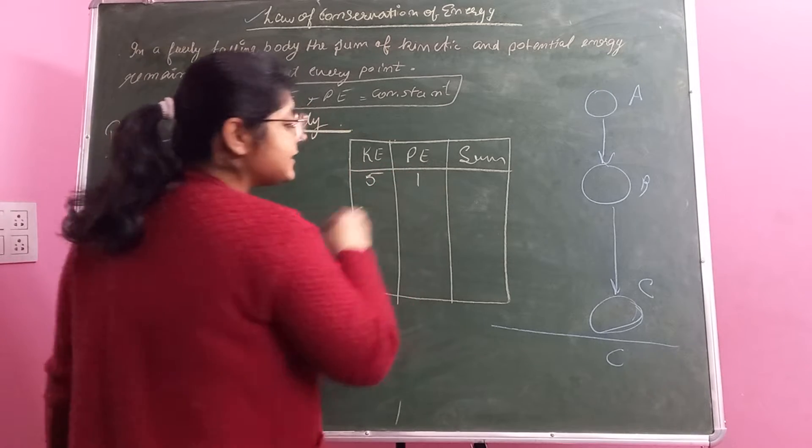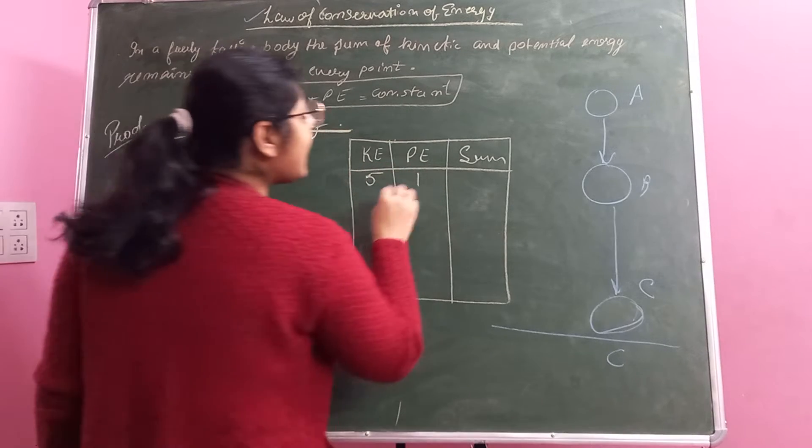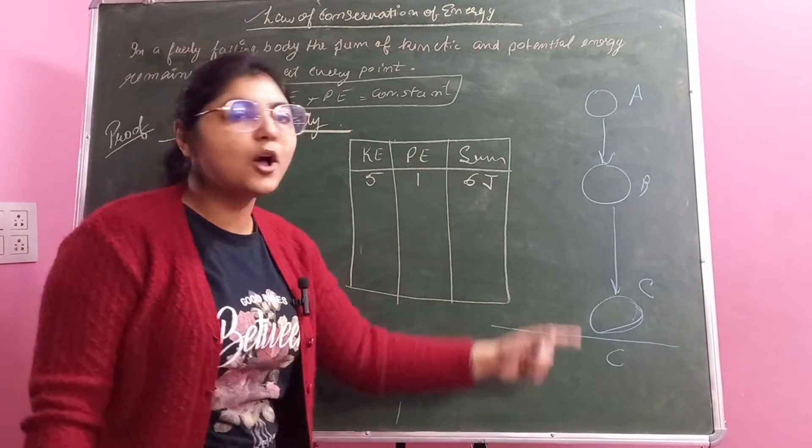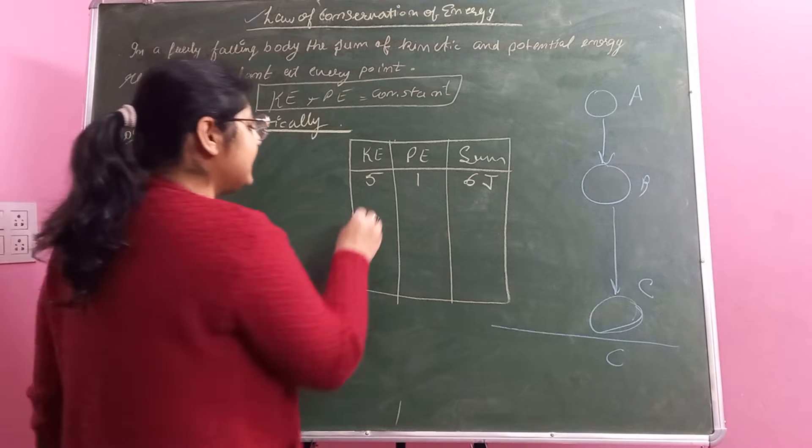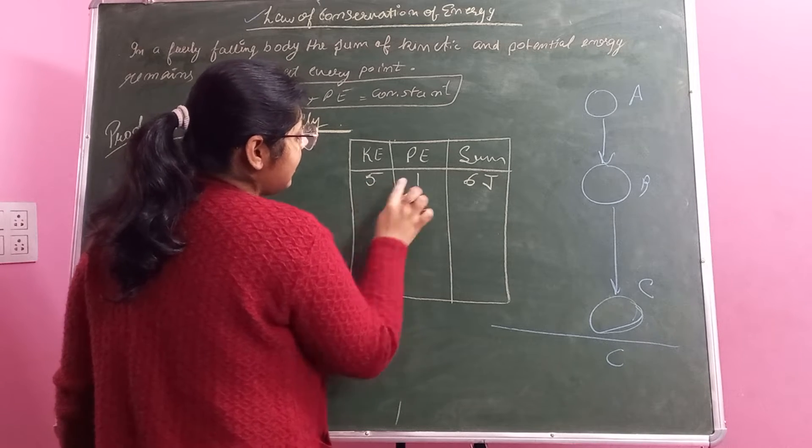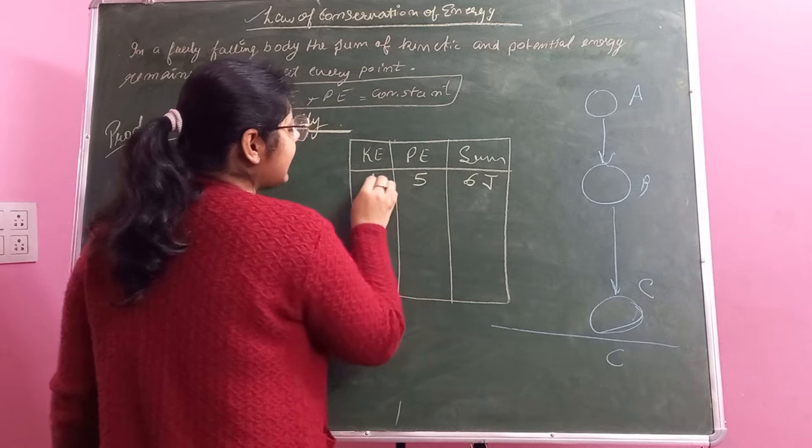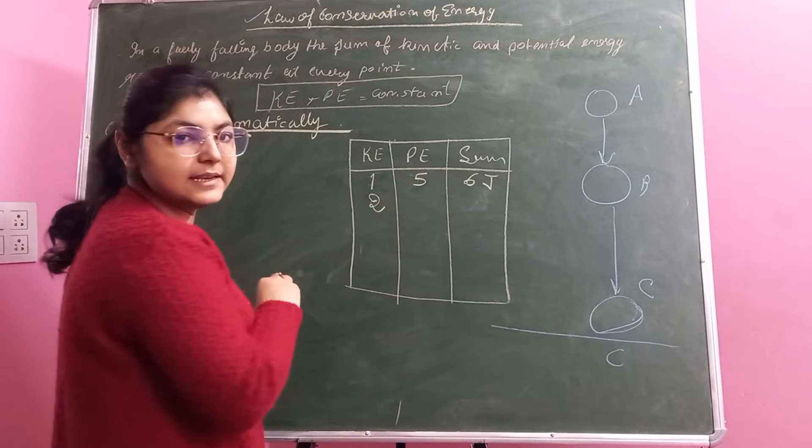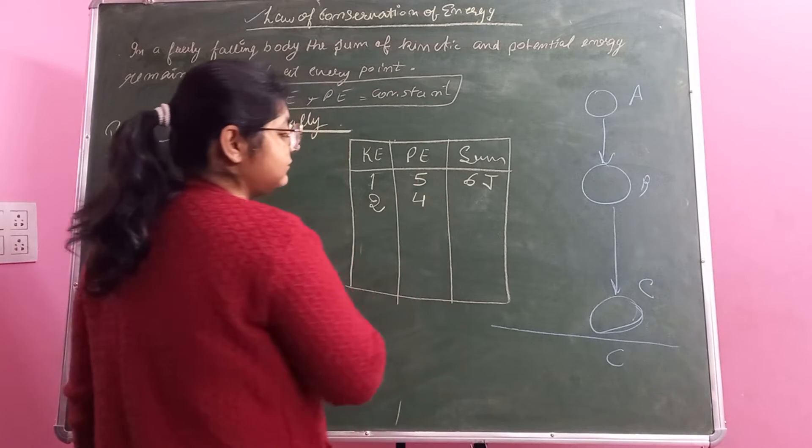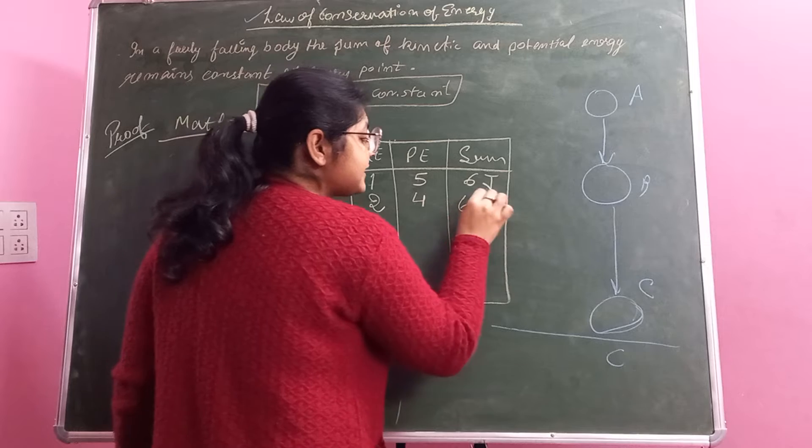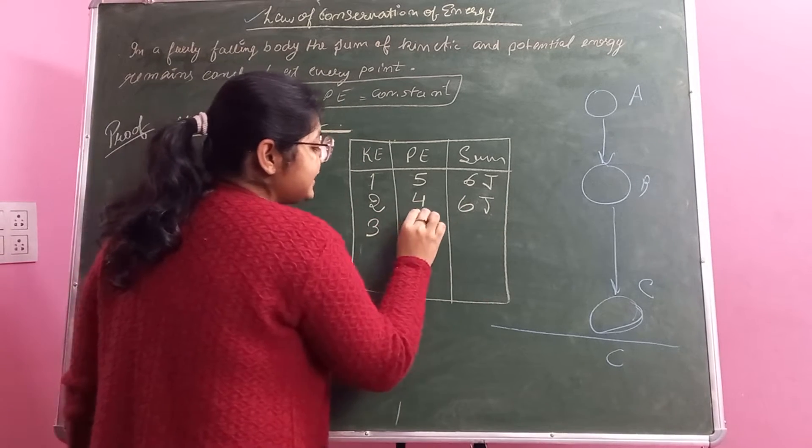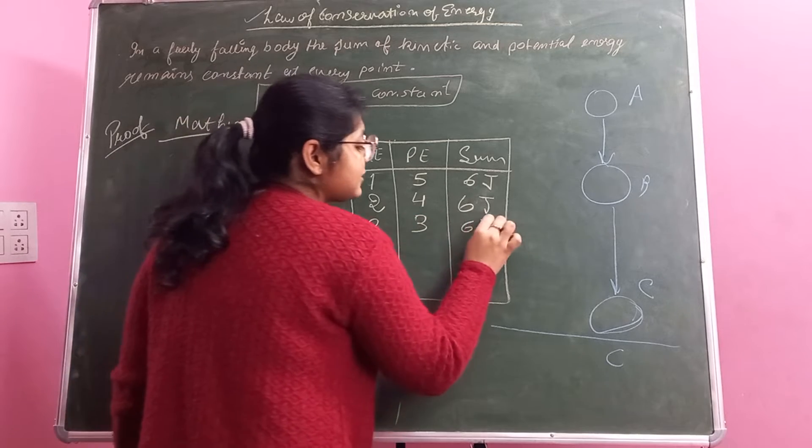potential energy is 1 joule. So the answer came out to be 1 joule. As the ball comes down, what happens? This kinetic energy starts increasing and this potential energy starts decreasing. But the sum remains constant. It increases, potential energy decreases, but sum remains constant.